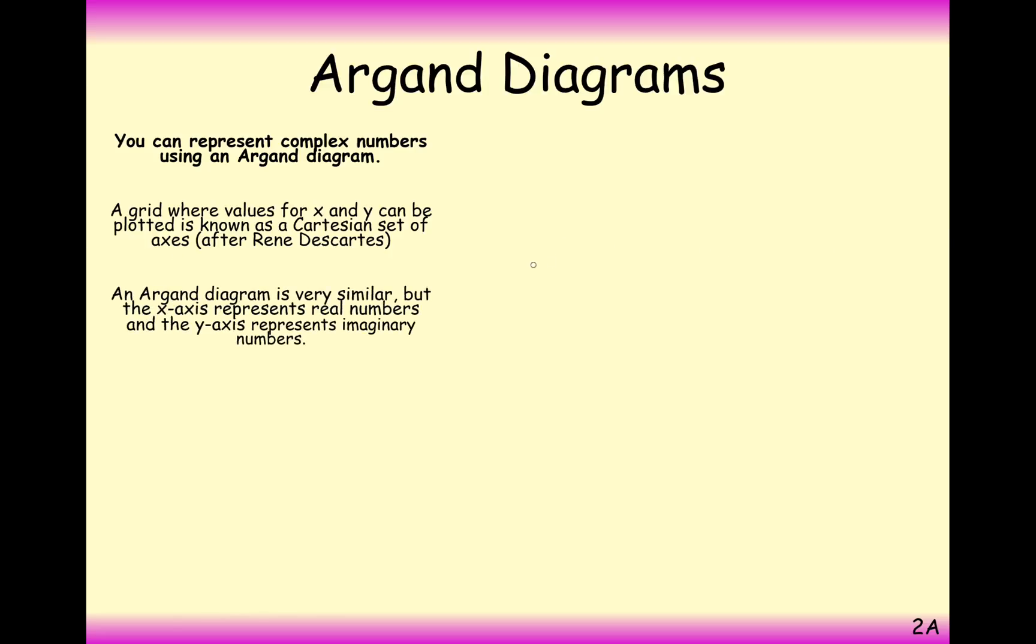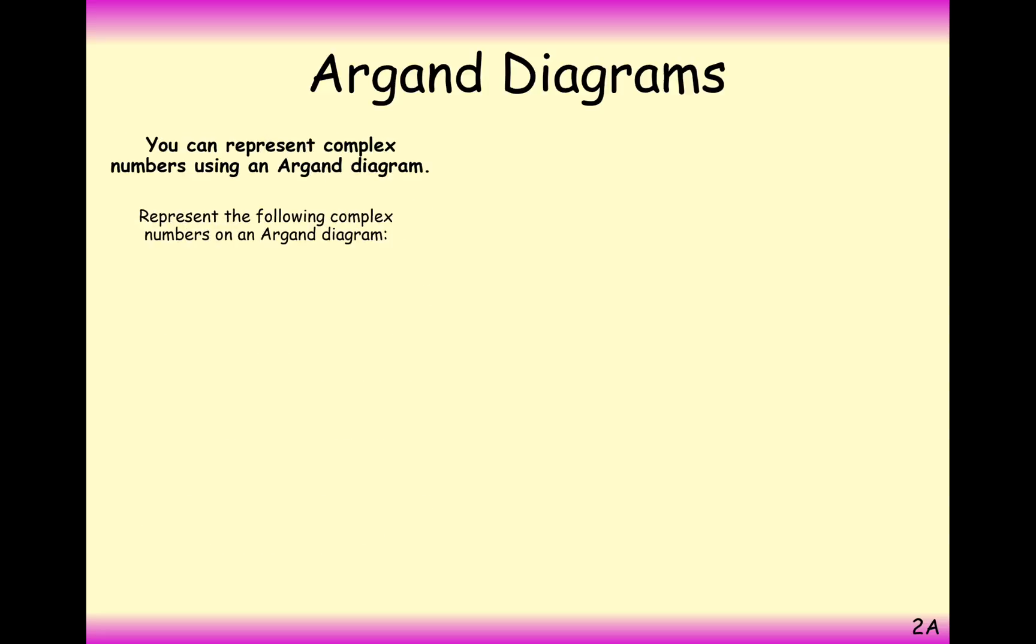Effectively the real part of your number is going to go from left to right, the imaginary part of your number is going to go up and down. So let's have a look at how we would plot 2 plus 5i on a number line, or effectively what we're going to call now an Argand Diagram in two dimensions.